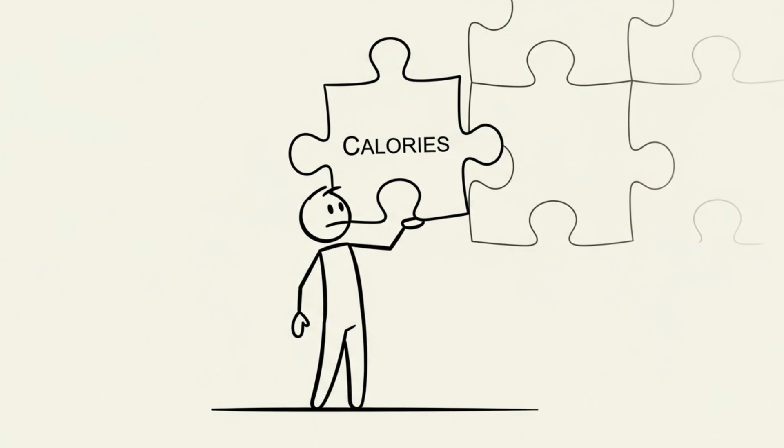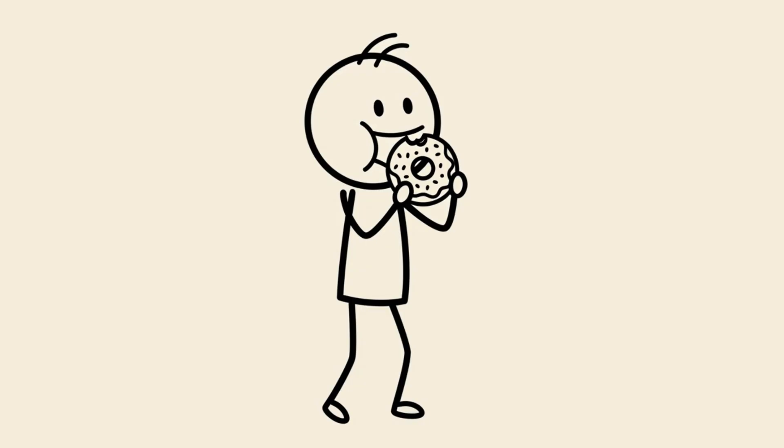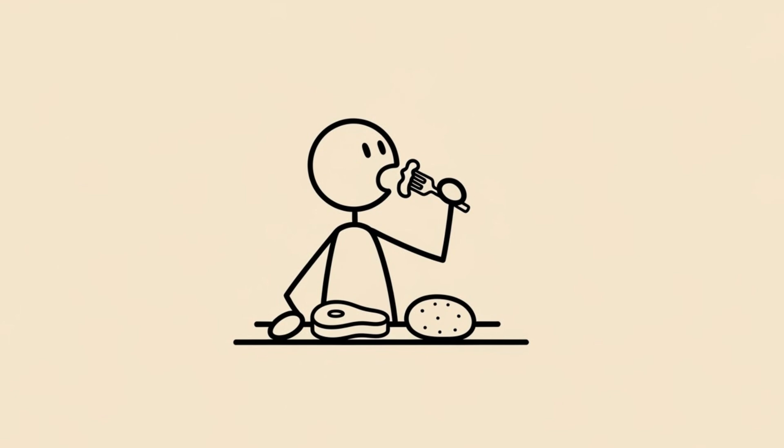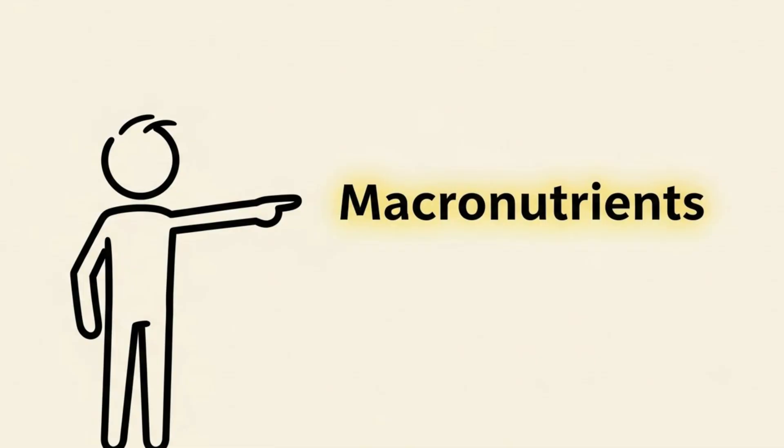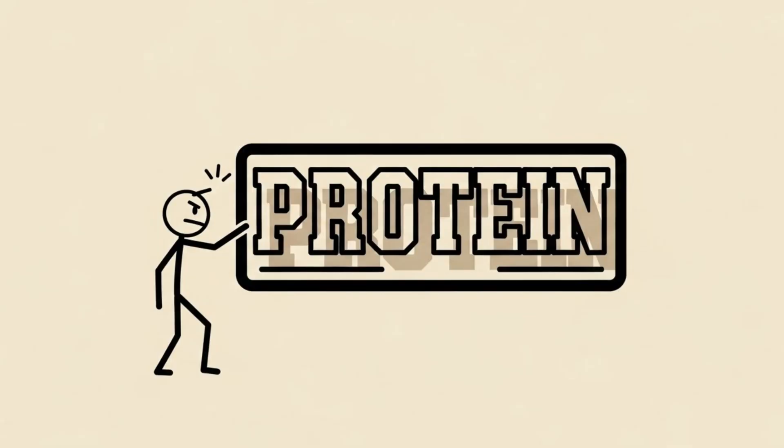But calories are just one part of the story. You can eat 500 calories of donuts or 1500 calories of steak and potatoes. The effect on your body composition will be drastically different. This brings us to the most critical variable, macronutrients.